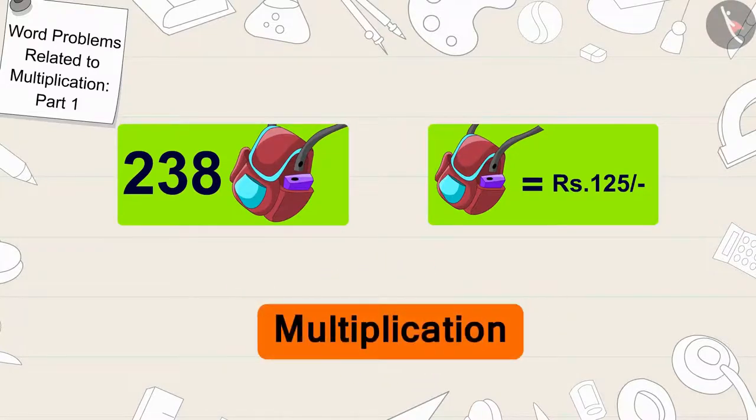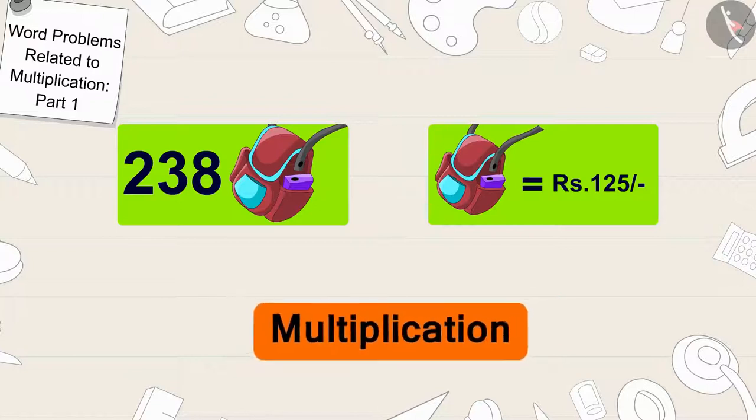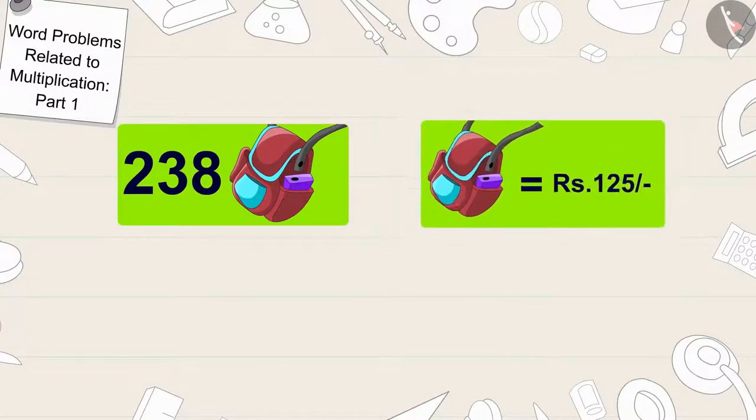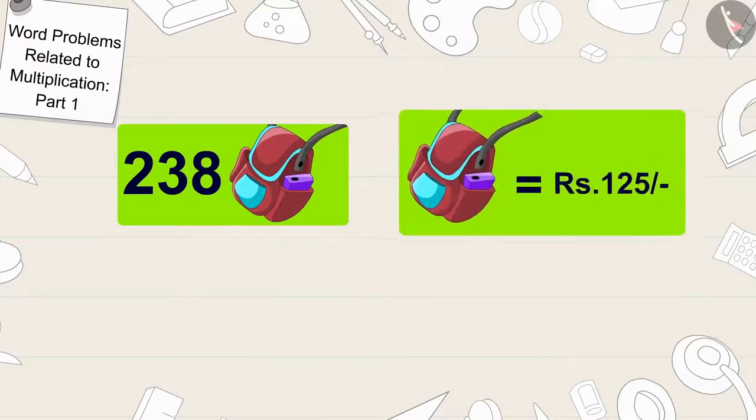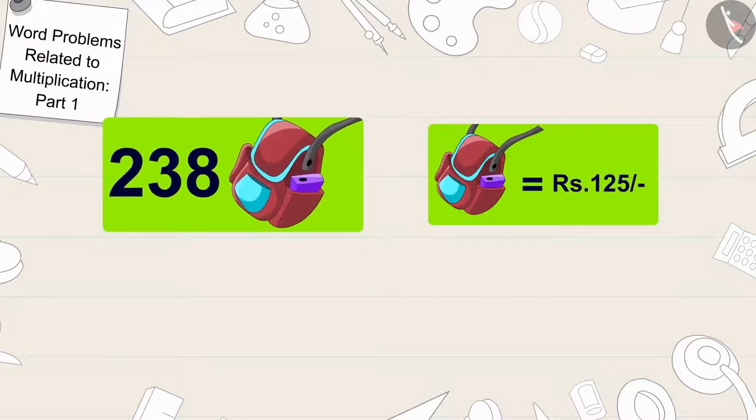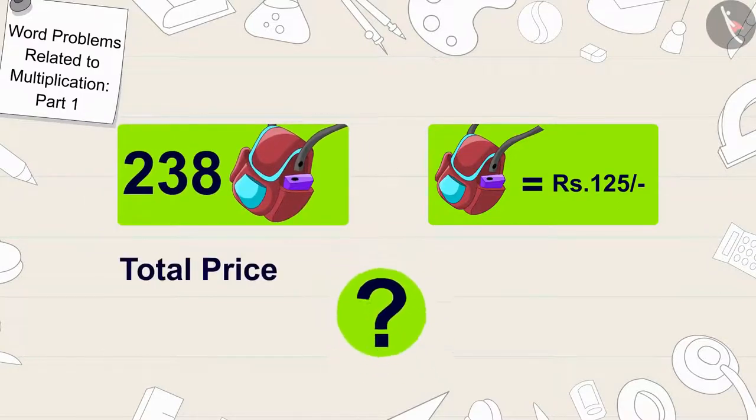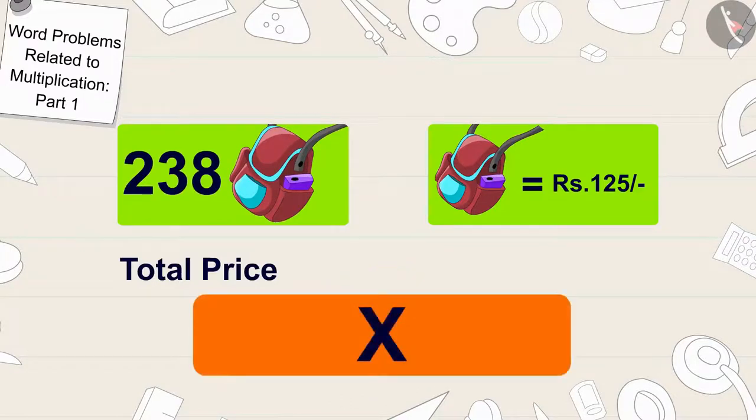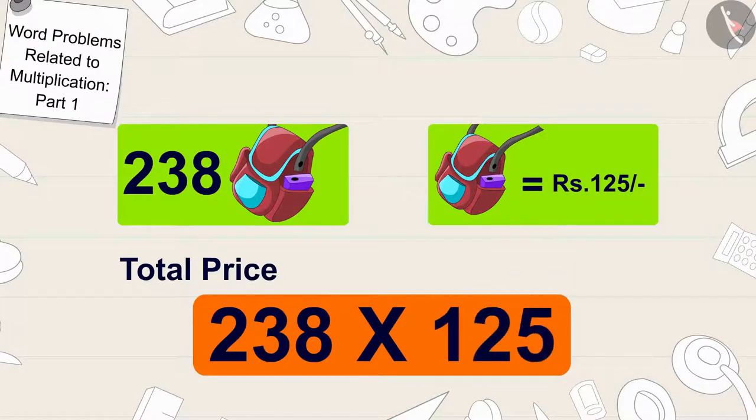Exactly, the process of multiplication. The cost of one bag here is 125 rupees and we have to find out the total price of 238 bags, so we will multiply 238 by 125.